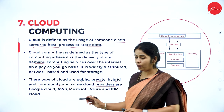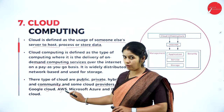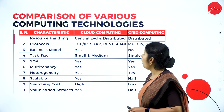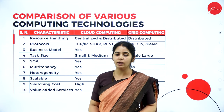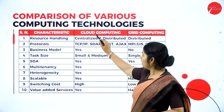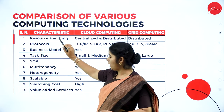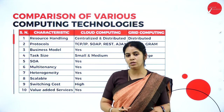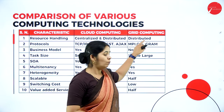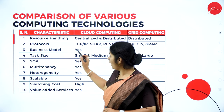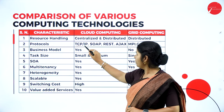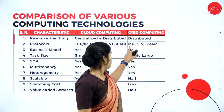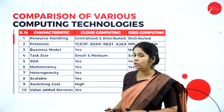Cloud providers include Google Cloud, AWS (Amazon Web Services), Microsoft Azure, and IBM Cloud. The comparison of various computing technologies is based on characteristics. Comparing cloud computing with grid computing: resource handling — cloud supports both centralized and distributed resource handling, while grid supports only distributed. Protocols — cloud uses TCP/IP, SOAP, REST, and Ajax; grid uses MPI, GIS, and GRAM. Business model — cloud computing is a business model with return income, whereas grid computing is not.